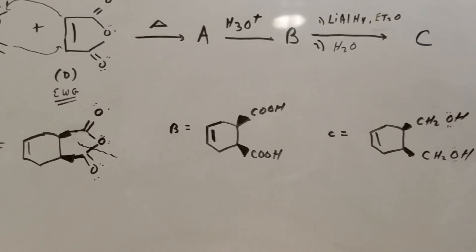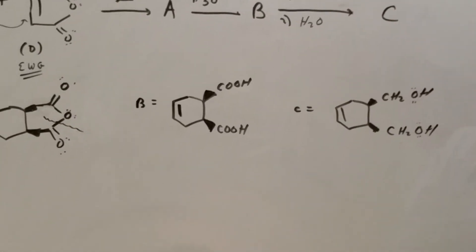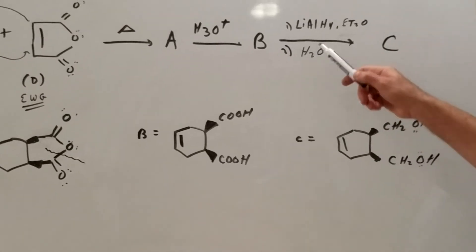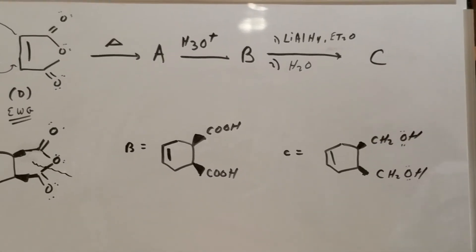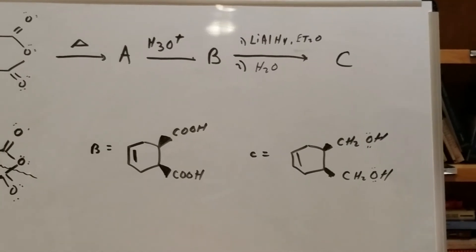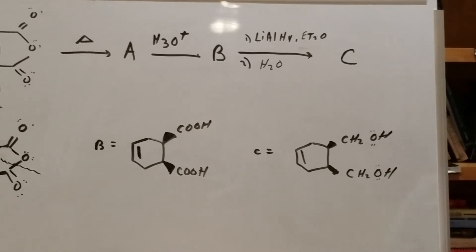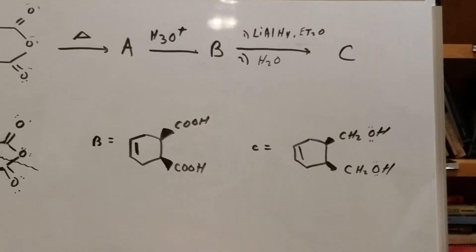Then finally the last step, you have lithium aluminum hydride in ether with water - that's a reducing agent. It's going to take both of the carboxylic acid groups down to two primary alcohols and this would be your final product.